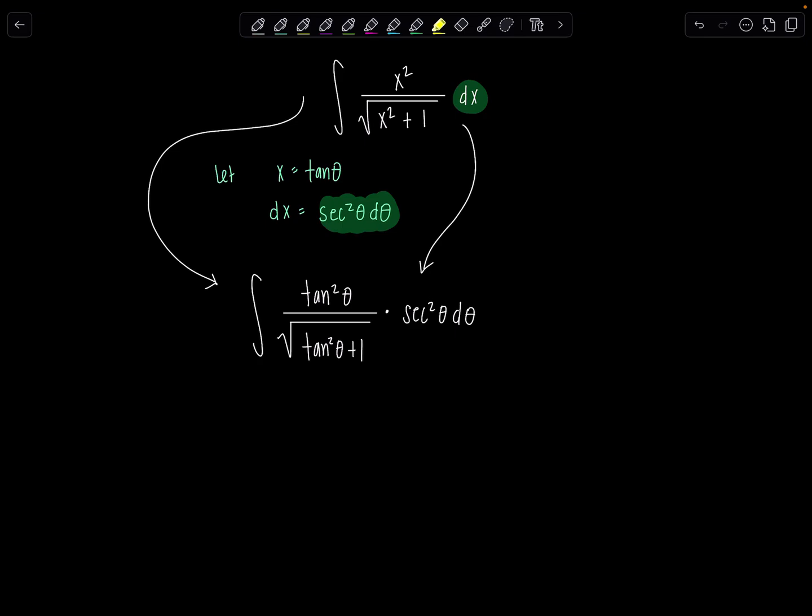Now remember, we do trig sub that way we can replace this expression that's usually underneath a radical, it doesn't have to be though, with the Pythagorean identity. So tangent squared theta plus 1, we know that that's secant squared theta. And then don't forget, that's sitting underneath a radical. So when I take the square root, technically it's the absolute value of secant theta. But remember, when we do trig sub, we restrict where theta can be so we don't have to worry about keeping those absolute value bars. So now I'm just going to have secant theta in the denominator from taking the square root of secant squared theta. And then we still have over here, secant squared theta d theta.